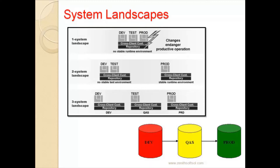We will now learn about a new topic: SAP System Landscapes. A system landscape is the arrangement of servers. A typical landscape consists of Development, Quality, and Production — whether it is an ACC, a BI Business system, a Process Integration, or any SAP server, they will all follow this typical three-system landscape.